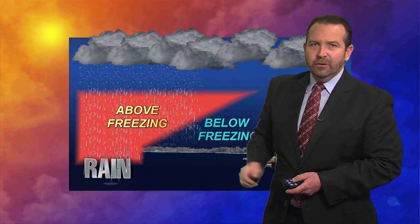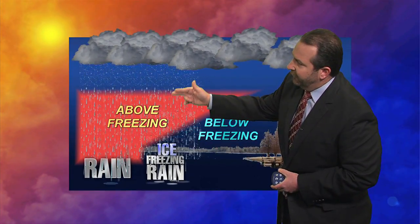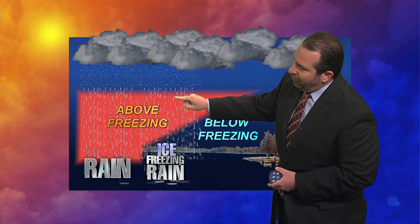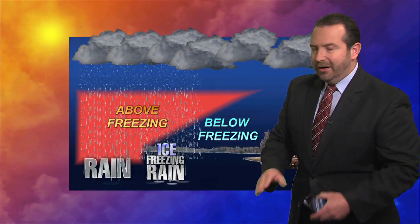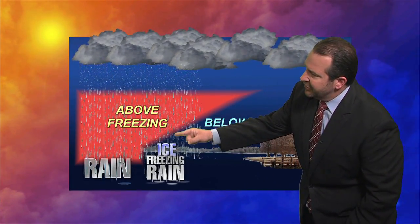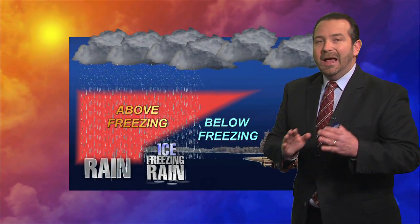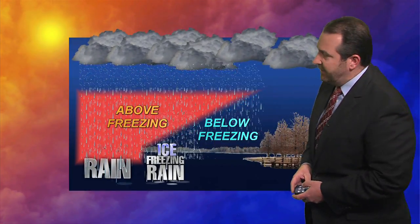But what about freezing rain? Same type of thing — it starts off as snow, falls through an above-freezing layer, and as it falls, it starts to melt and becomes a liquid. But as it moves close to the ground, it re-enters below-freezing air, but it doesn't have time to refreeze before hitting the ground. So it falls as a liquid onto objects that are at or below freezing, coating bridges and power lines. And that's when we get an icy mess.